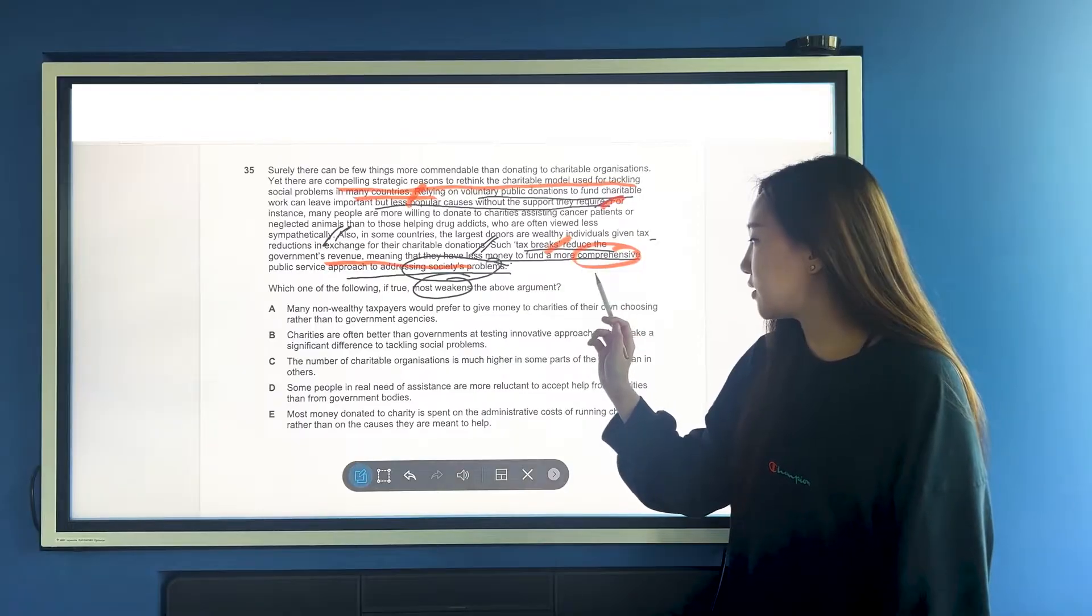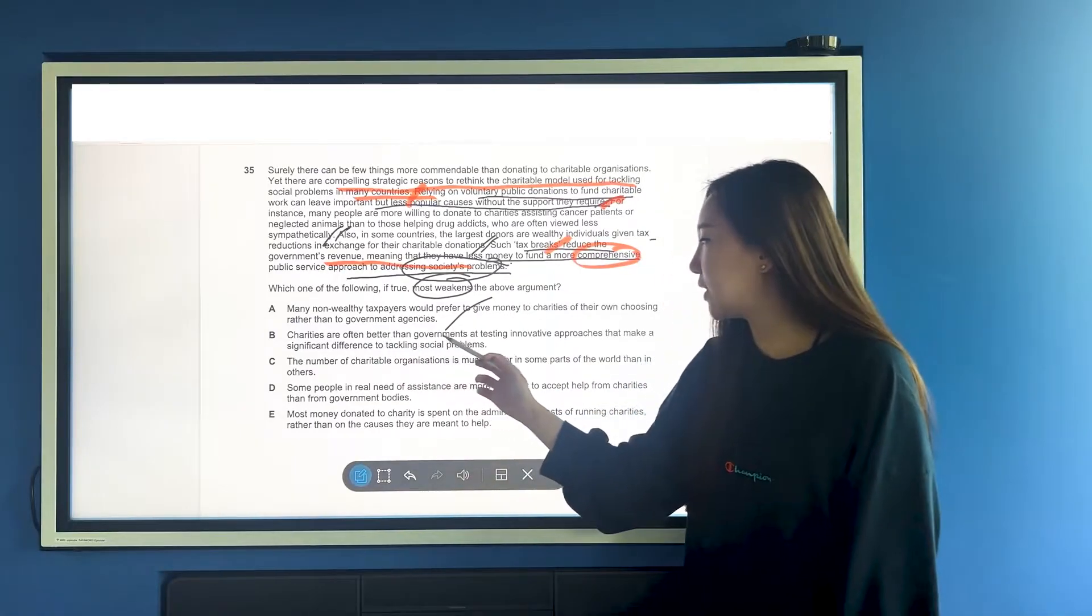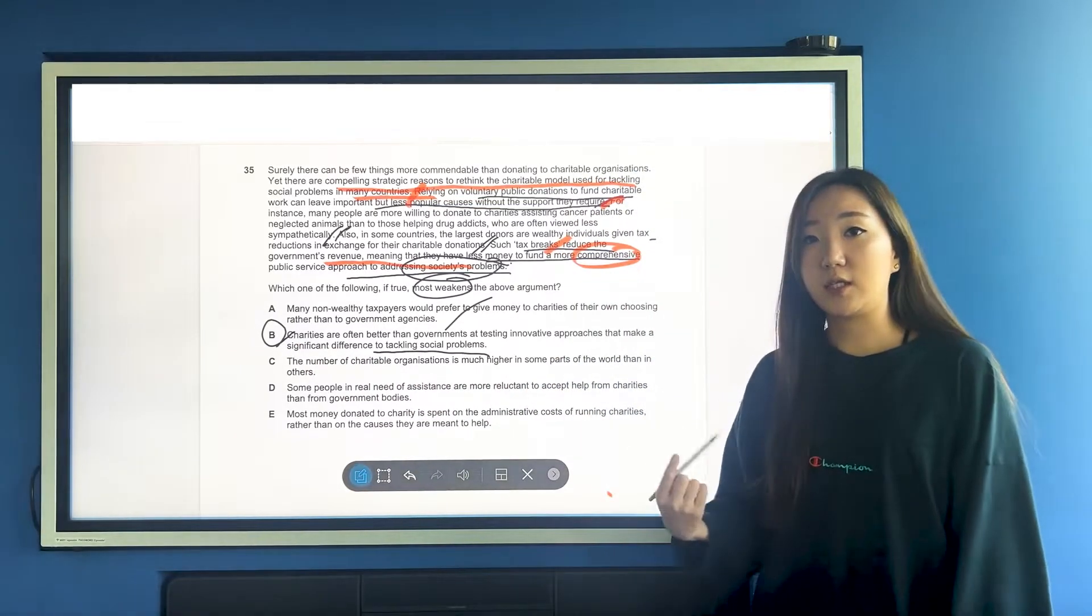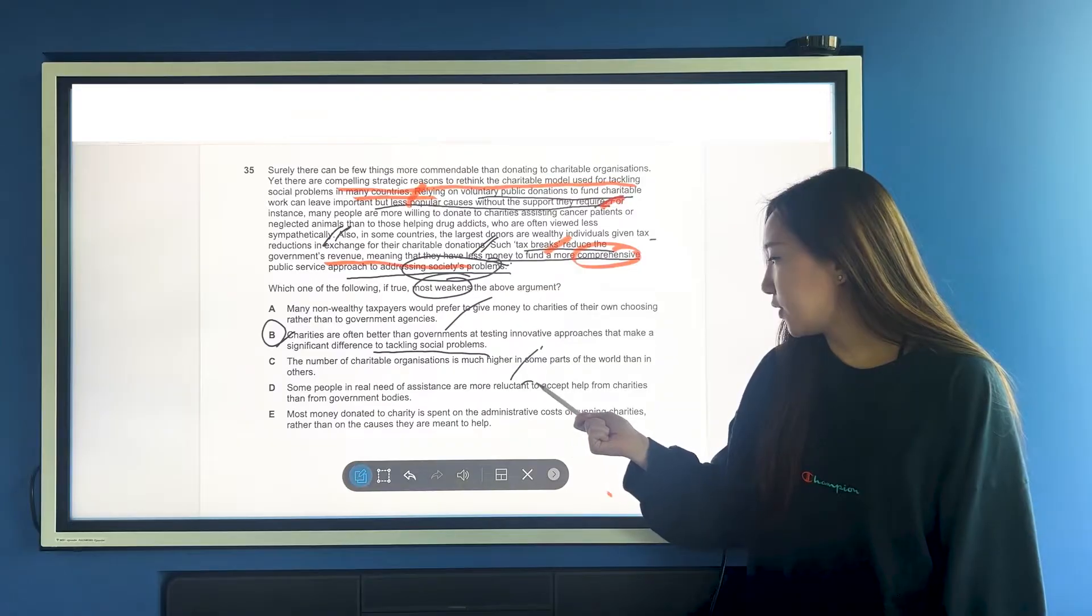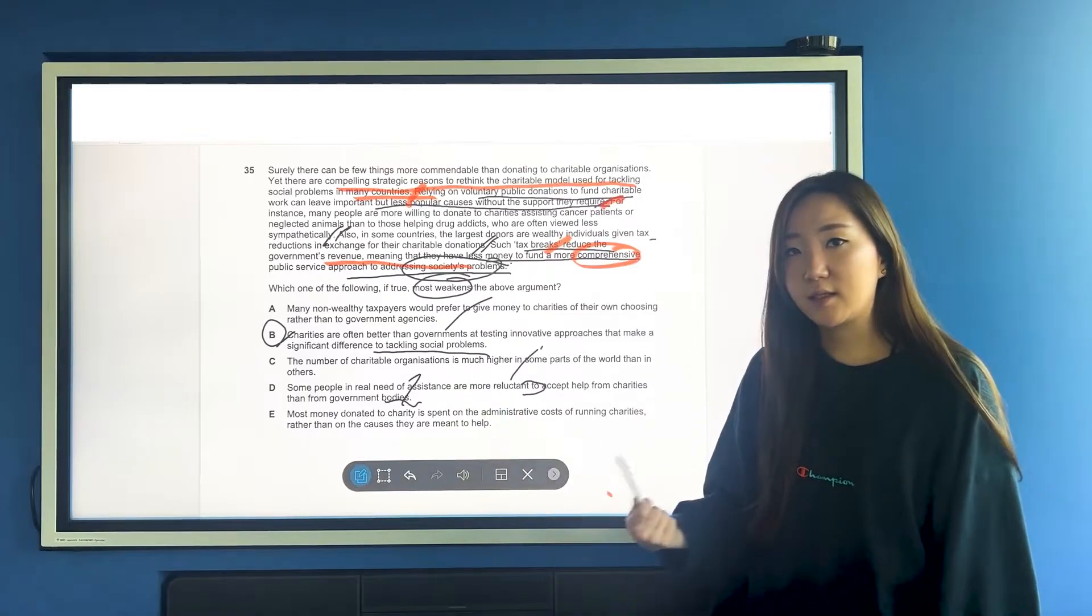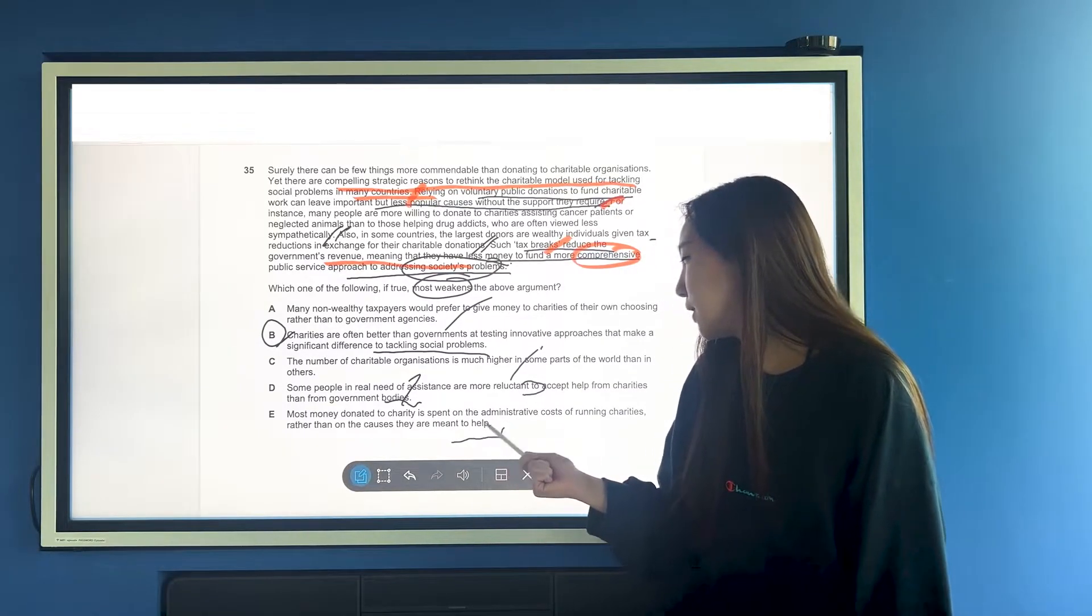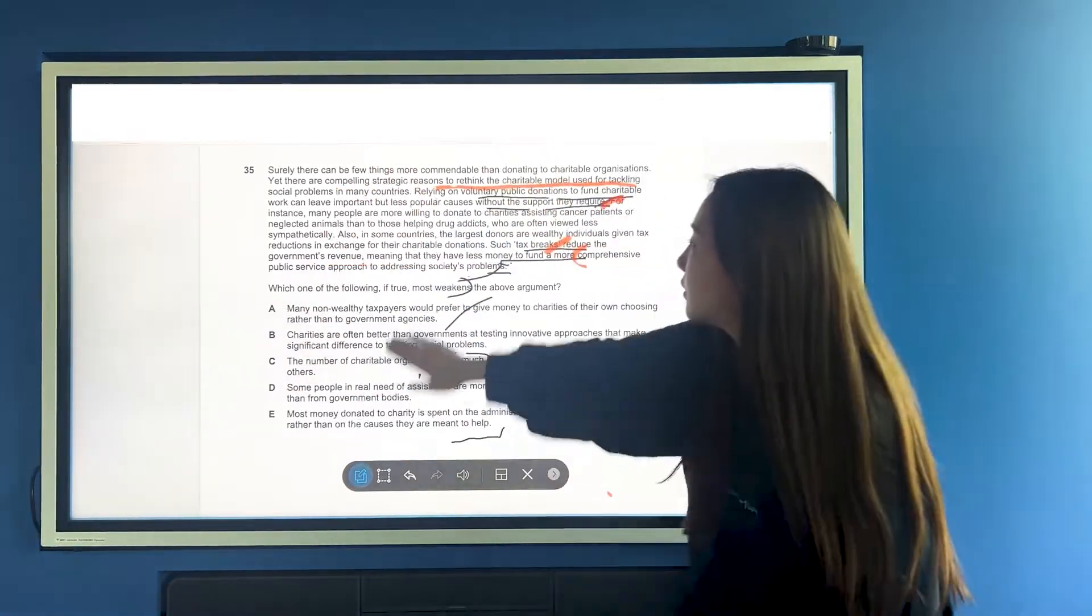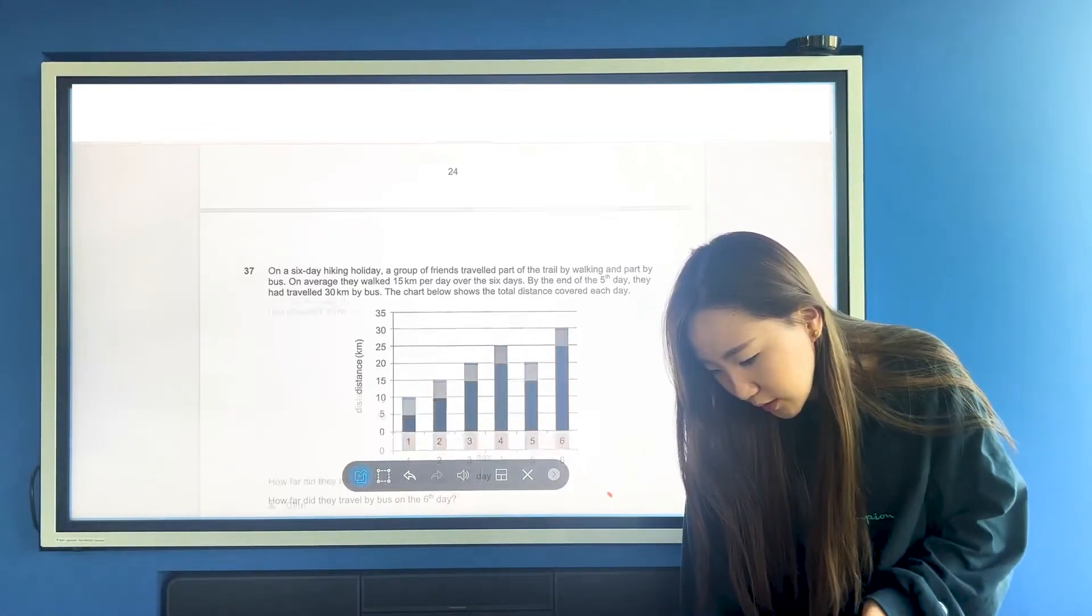Many non-wealthy taxpayers would prefer to give money to charities of their own choosing - that doesn't matter. B, charities are often better than governments at testing innovative approaches that make a significant difference to tackling social problems. Here we go, so that one is now considering the other side of the argument. C, number of charitable organisations much higher in the world - nope. D, some people in real need of more assistance are reluctant to accept help from charities - that doesn't matter as well because we're trying to tackle social problems. E, money you donated would be spent in administrative costs rather than on courses - this would actually strengthen the argument because we're saying charities are the problem.